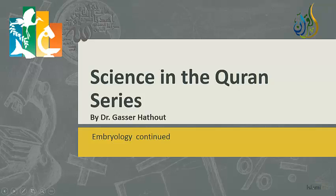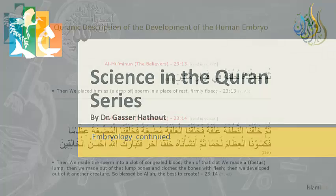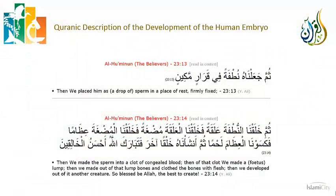Assalamu alaikum and welcome back to Science and the Quran. We are continuing with the second part of our embryology series. As you remember, we were going through verse 14 of Surah Al-Mu'minoon and had already talked about the first part of the verse: 'Thumma khalaqna al-nutfata alaqatan fa-khalaqna al-alaqata mudghatan fa-khalaqna al-mudghata ithaman fa-kasawna al-ithama lahman.' Now we would like to talk about the next part of the verse.